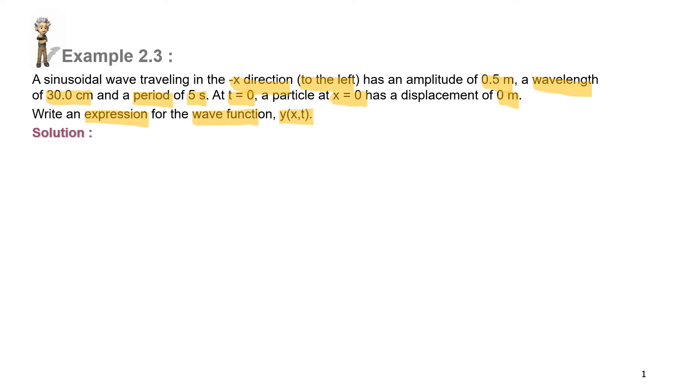So, masih cara yang sama seperti example sebelum ini. So, apa yang kita akan buat untuk first step, we're going to write down the general equation of wave function, which is y in terms of x and t is equal to A sin omega t plus minus kx.